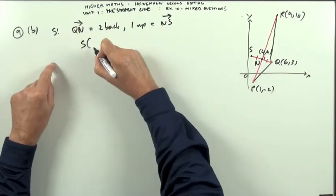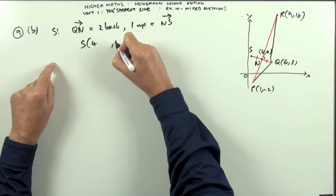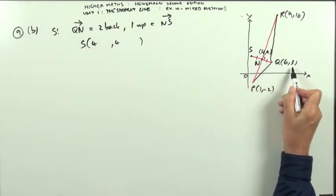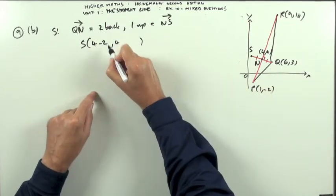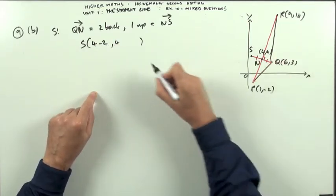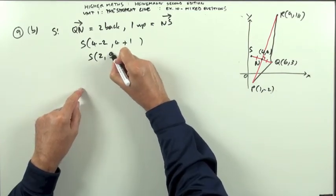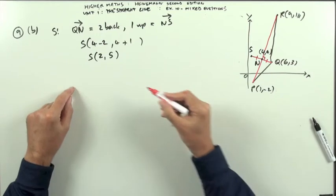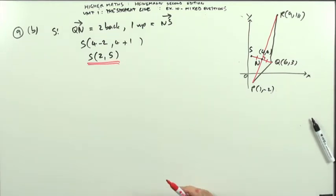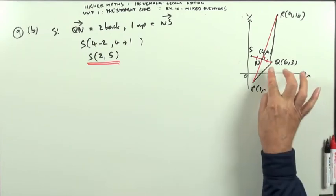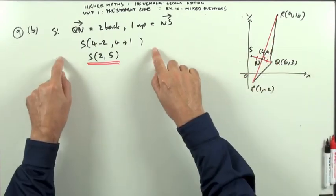So to get S, I'll just put down N's coordinates and apply those steps to it. So from N, I'm going to go 2 back, so it's 2 off of the x-coordinate, and 1 up, so it's 1 onto the y-coordinate, which means S is going to be the point (2, 5). That's all that's needed to find that particular one. Just count the boxes, not literally on the diagram because you're not allowed to do that, but numerically.